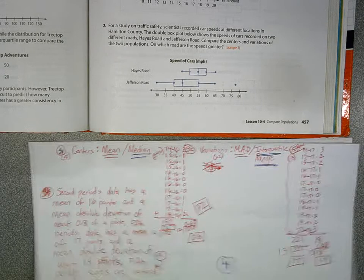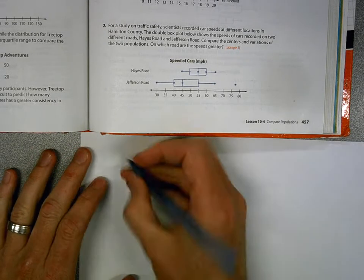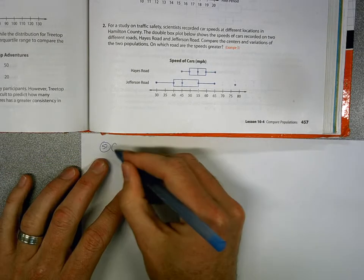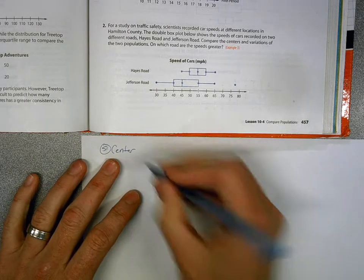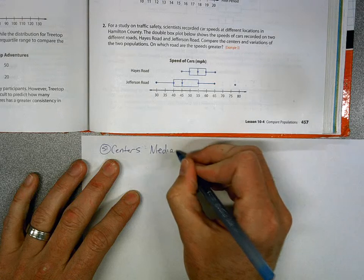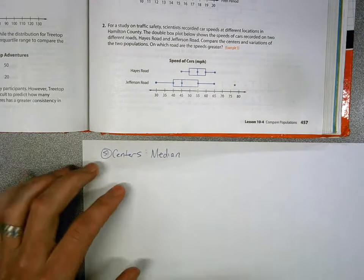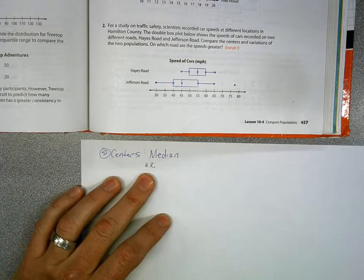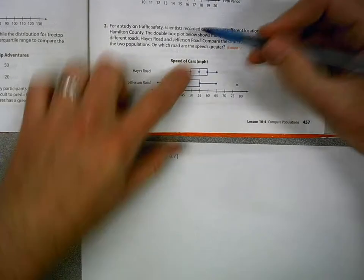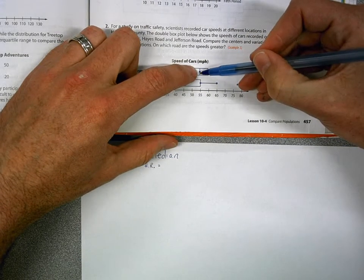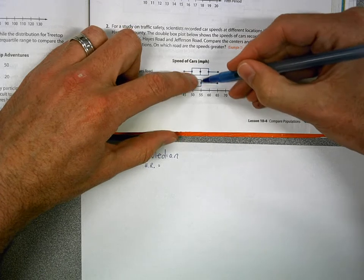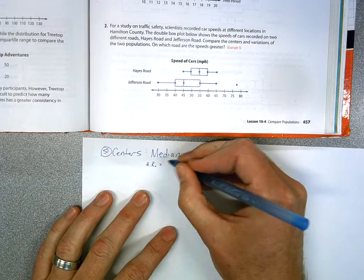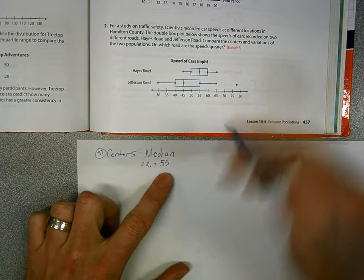So here we go. Step one is, let's go ahead and find the centers, which I said in this case is the median, because it's a box and whisker plot. So I'm going to go ahead and say Hayes Road. Well, the median on Hayes Road is right here. Remember the median is that line and that dot right in the middle of our box, or inside the box. And that appears to be, we'll just say it is 55 miles per hour.